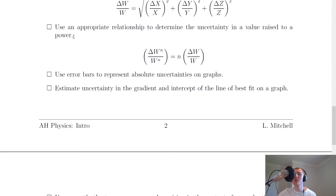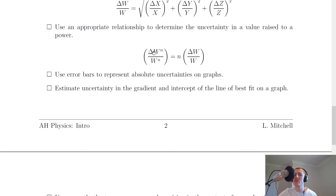Next, you need to use an appropriate relationship to determine the uncertainty in a value raised to a power. If you have a quantity raised to a power, you use the power in the calculation to find the total uncertainty. The uncertainty in W to the power of n, divided by W^n itself, equals the power n times the uncertainty in W divided by W. You would substitute actual numbers in place of these quantities.